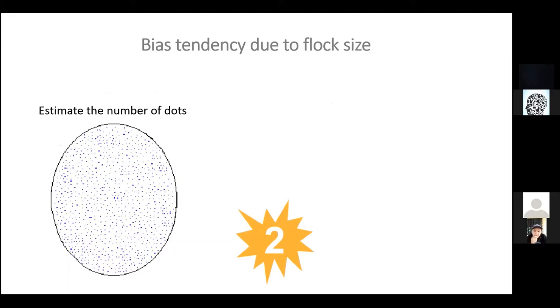Here's one of those yellow starbursts indicating we want you to do something. I'd like you to participate in a poll by estimating how many dots are in this circle or oval.